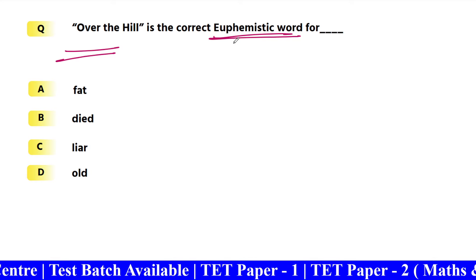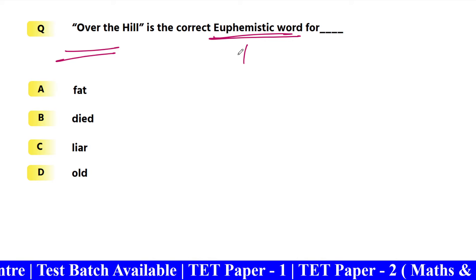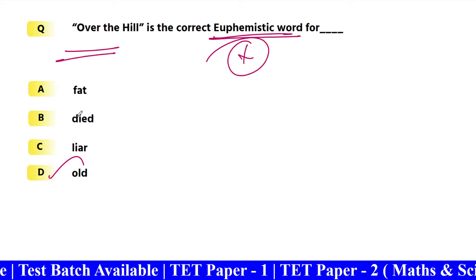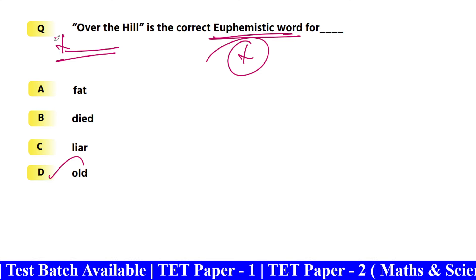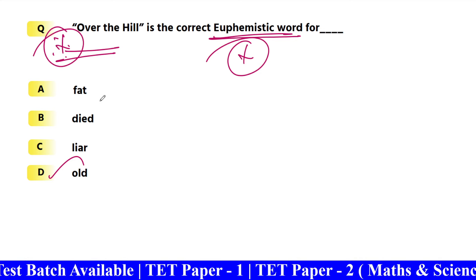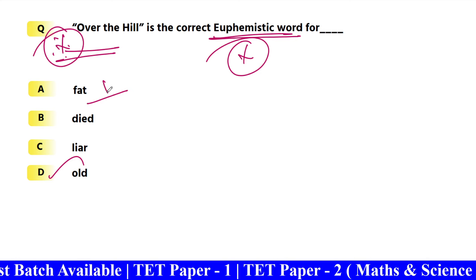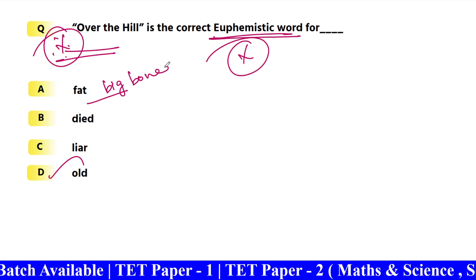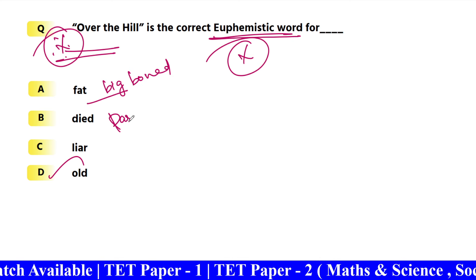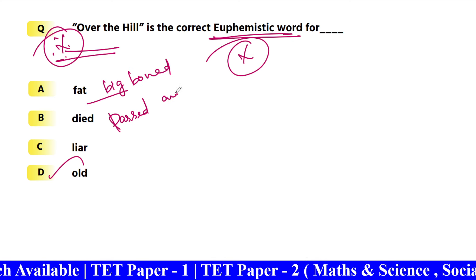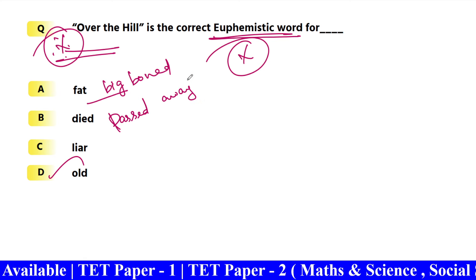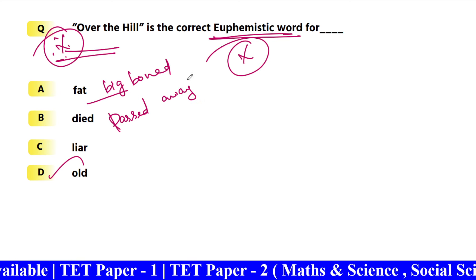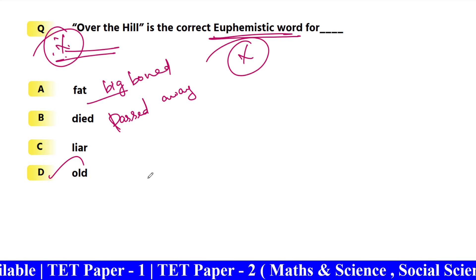Related words — euphemisms. 'Over the hill' — old. This is a repeated question. Like 'fat' — big-boned. 'Died' — passed away. 'Liar' — mendacious. Truth.